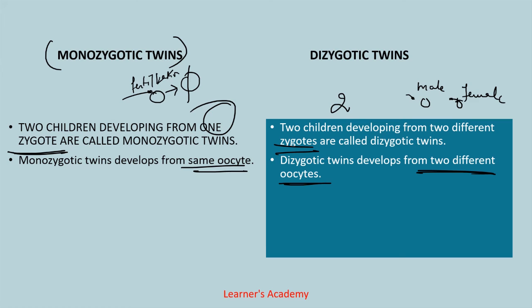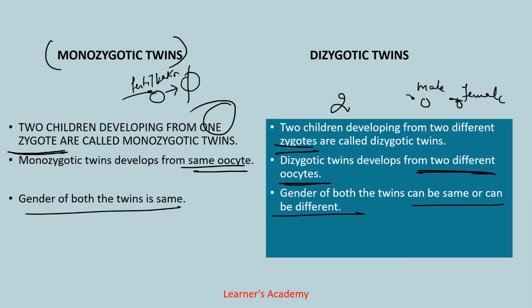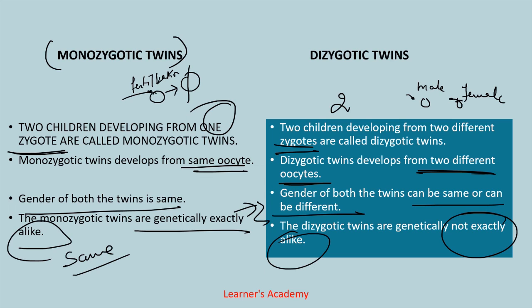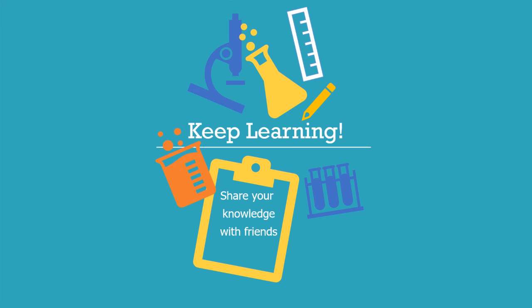In case of monozygotic twins, the gender of both twins is the same because only one sperm fertilized the oocyte and later the zygote divided into two — so the gender of both twins will be the same. In dizygotic twins, the gender of both twins can be the same or different. Monozygotic twins are genetically exactly alike, whereas dizygotic twins are genetically not exactly alike. That was the difference between monozygotic twins and dizygotic twins. I hope you enjoyed watching the video. If you want to see more such videos, subscribe to my channel and take a look at Learner's Academy page. Leave your comments in the comment section, keep learning, share your knowledge widely with your friends — thank you for watching and have a wonderful day.